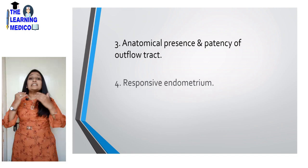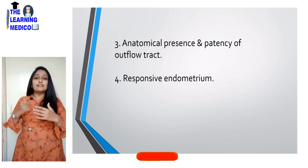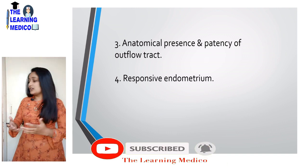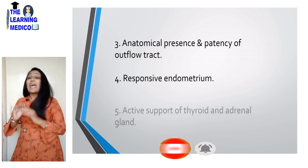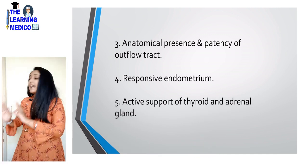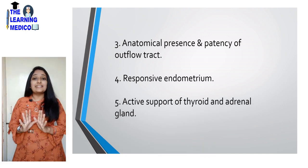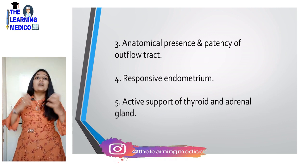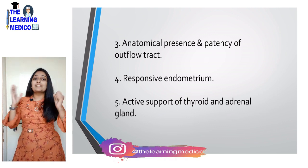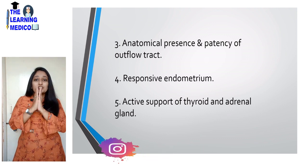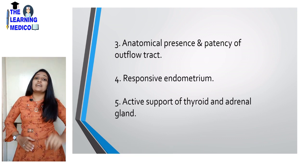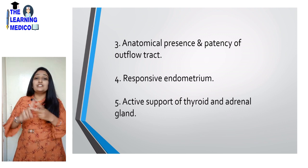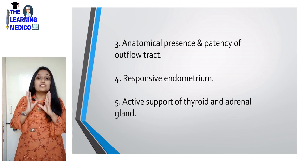The fourth factor is a responsive endometrium — the endometrium should be responsive so that normal menstruation occurs. The fifth factor is the active support of the thyroid and adrenal glands. If there is a problem with the thyroid gland, one of the first symptoms is amenorrhea. So whenever a patient presents with amenorrhea, you must test thyroid function — TSH, T3, and T4.